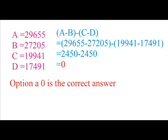We got the value of A, B, C and D as: A equals 29655, B equals 27205, C equals 19941, D equals 17491.